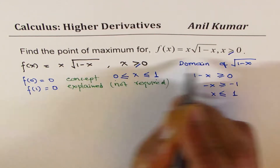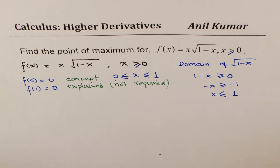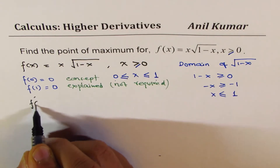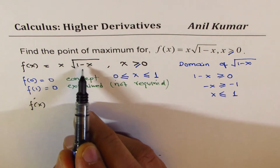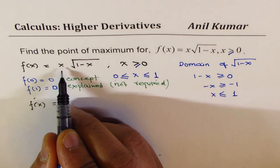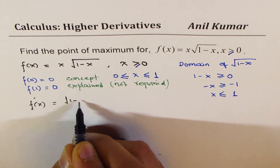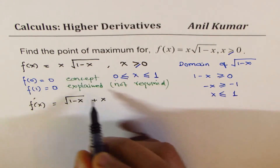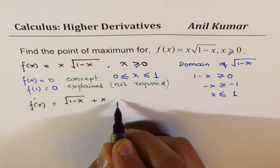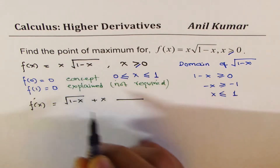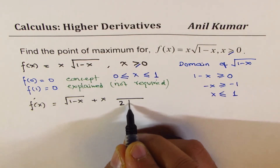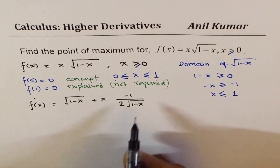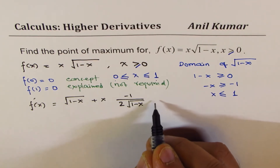To find the maximum, we first need the derivative. The function is x times √(1−x), so we use the product rule. The derivative of x is 1, giving √(1−x), plus x times the derivative of √(1−x). The derivative of √(1−x) is 1 over (2√(1−x)) times the derivative of (−x), which is −1.